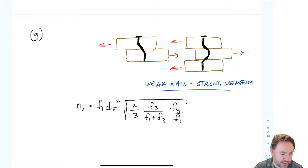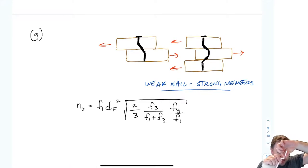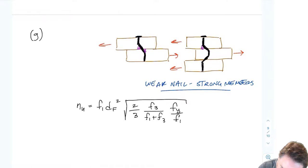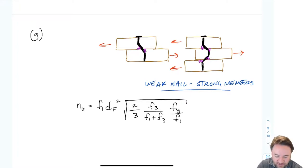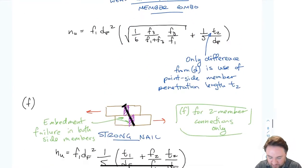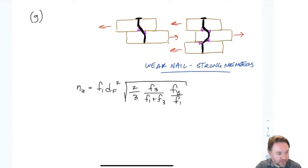Failure mode G is the case where the nail is very weak relative to the other members. The nail fails locally in one spot as one wood member moves past another, causing yielding of the nail. This requires a little bit of localized damage to the members. The equation is similar to the first nail-yielding terms in modes D and E, but modified for more bending because these nails are now bending twice — they have double curvature at those points. Also important to note: Fy is the yield strength of the nail, and it appears in the nail-yielding equations.